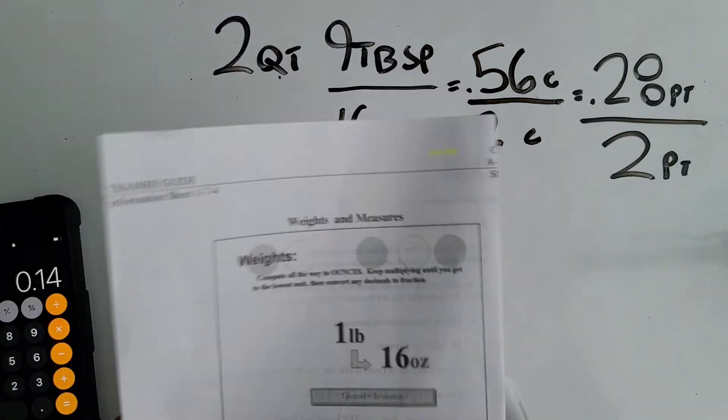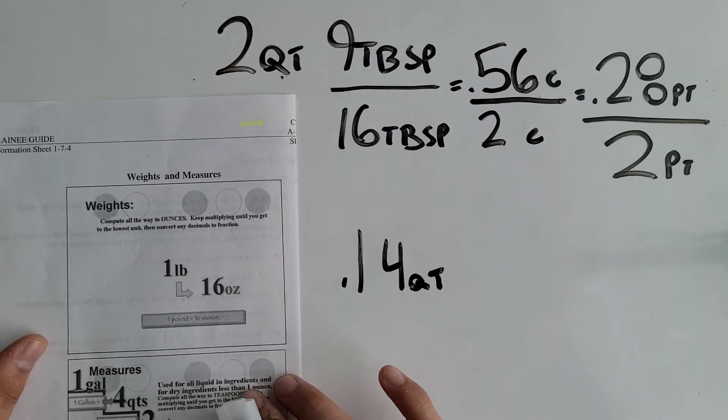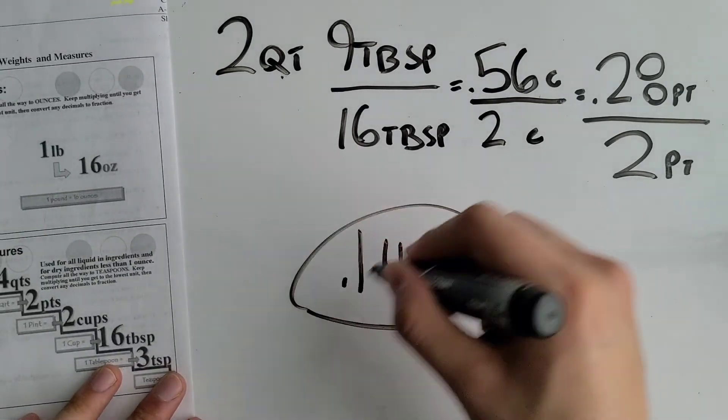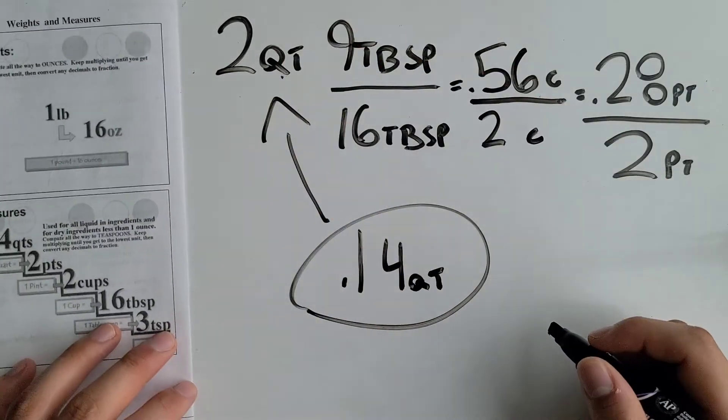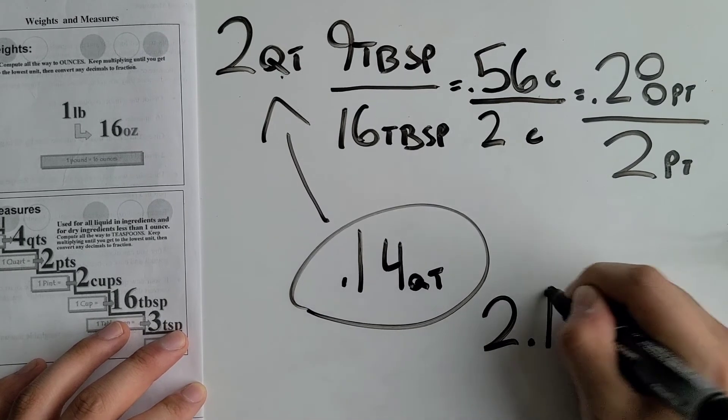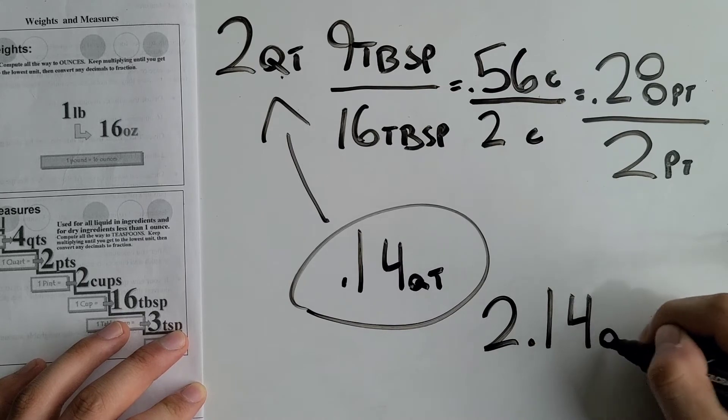Now that they're the same unit we just add these two together. This one and this one. So your final answer would be 2.14 quarts.